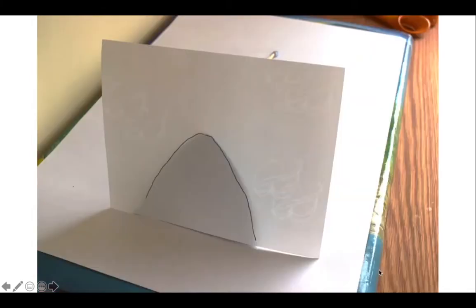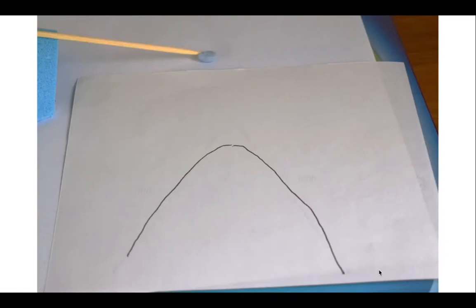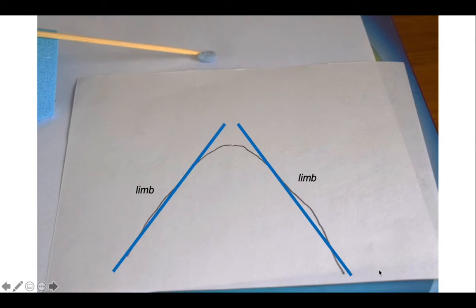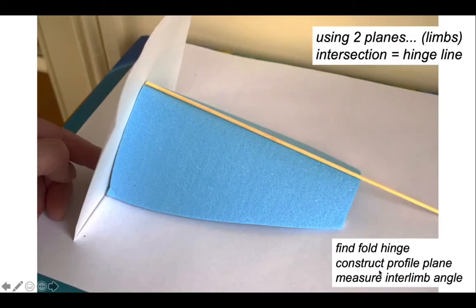Looking onto the profile plane, I've traced off what the fold looks like on it — that is the true shape of the fold. We have the limbs here, and the angle between these limbs is the inter-limb angle, which we measure on the profile plane. We plot two planes representing the limbs, find their intersection to get the hinge line, construct the profile plane, and then measure the fold inter-limb angle upon it.